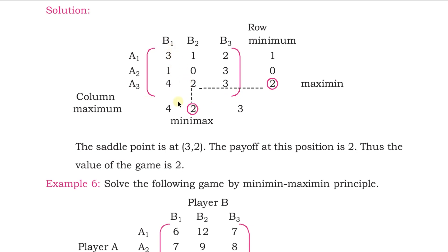Now identify the minimax by writing the largest number from each column. For column B1 — 3, 1, 4 — the largest is 4. For the next column — 1, 0, 2 — the largest is 2. For the next — 2, 3, 3 — the largest is 3. Out of these column maximums 4, 2, and 3, the minimum is 2. Round it off and remember the position.